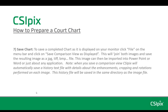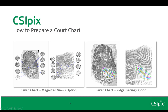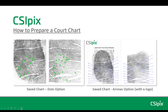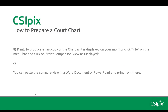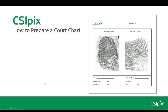Here are some saved charts with the different annotation types. The first one has magnified views, the second has ridge tracing, the third has dots, and the fourth has arrows. To print a hard copy of a chart as it's displayed on your monitor, click File on the menu bar and click Print Comparison View as displayed. Or you can copy and paste the compare view into a Word document or PowerPoint and print from there. I'll show an example — this is the type of thing you can create if you paste your compare view into a form you've created in Word.